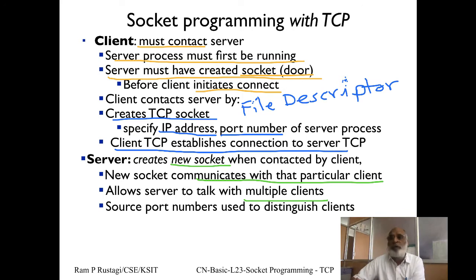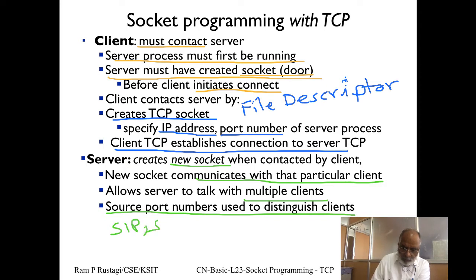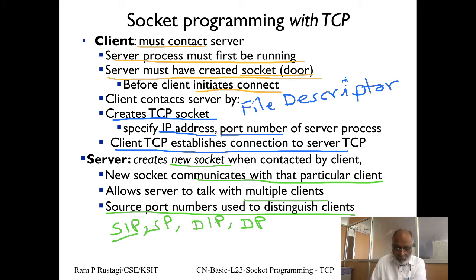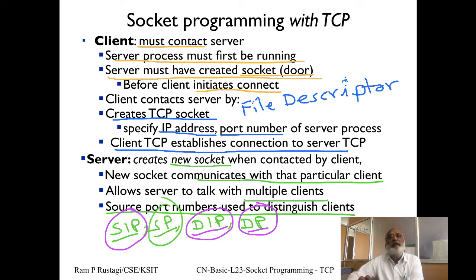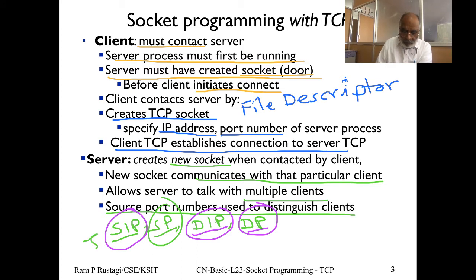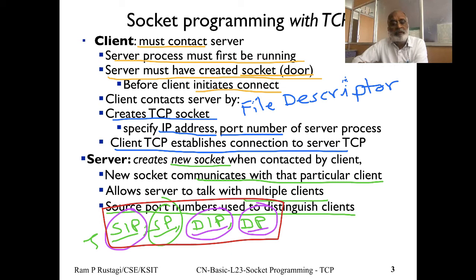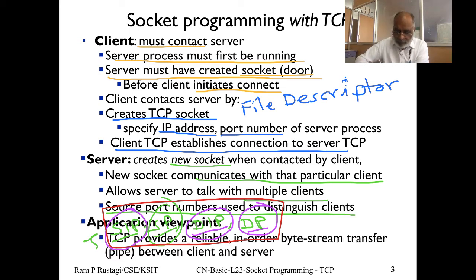The OS knows which client is which because in TCP a socket is identified by a four-tuple: source IP, source port number, destination IP, and destination port number. From the client's perspective, the client IP and client port identify one end; the server IP and server port identify the other. For a given server the server IP and port remain the same, but different clients have a different IP or port number, distinguishing each connection.